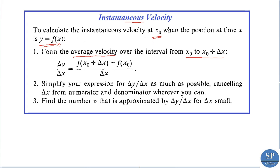To find the instantaneous velocity of the particle at a given time x₀, first we need to find the average velocity over the interval x₀ to x₀ + Δx, that is Δy/Δx. The next step is to simplify this expression Δy/Δx as much as possible, cancelling Δx from the numerator and the denominator wherever you can. Then the third step is to find the new number v that is approximated by Δy/Δx for Δx small.